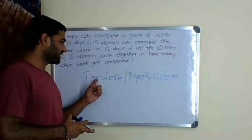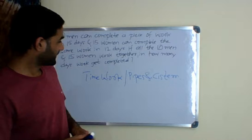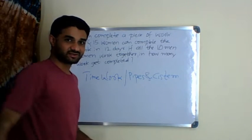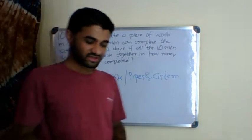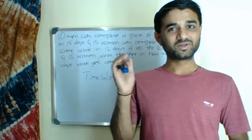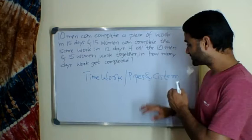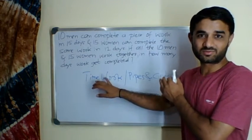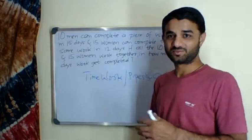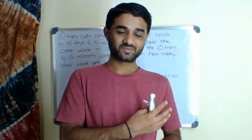Similarly, for time and work, which is another important topic of quantitative aptitude, and pipes and cisterns, the fundamentals are the same. So they shouldn't be taught separately. They should be learned together because what applies to this applies to that. The concepts, principles, and basics remain the same. From this video we will start time and work.